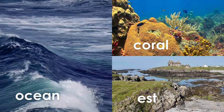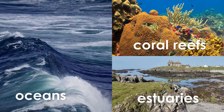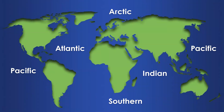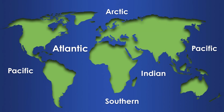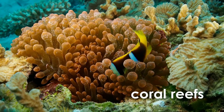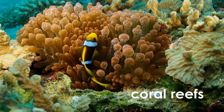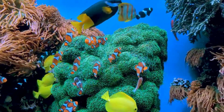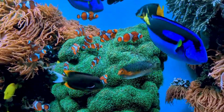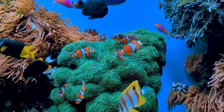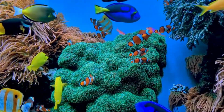Marine biomes include oceans, coral reefs, and estuaries. Earth has five oceans that cover most of the planet: the Atlantic, Pacific, Arctic, Indian, and Southern oceans. Coral reefs form in warm, shallow ocean water. Reefs are made of living organisms called polyps, which eat plankton and algae to stay alive and grow.